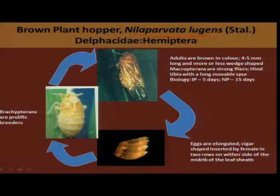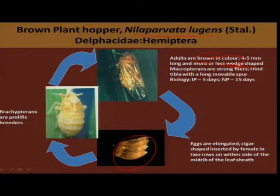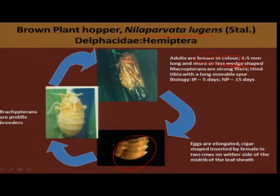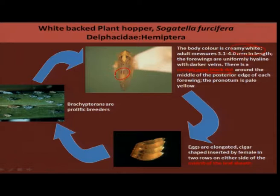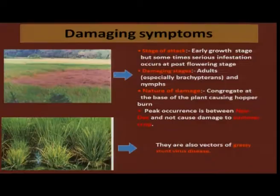The brown plant hopper, scientifically referred to as Nilaparvata lugens, belongs to Delphacidae. The adults are typically brown in color and wedge shaped. They lay eggs serially — translucent eggs in the leaf tissues — which emerge in 3 to 4 days. Both the brachypterous form and adults are the damaging stage. Similarly, the white backed plant hopper can be differentiated under field conditions by color — they are creamy white with a conspicuous black spot on both wings. Their egg laying is also transparent, again in leaf tissues, and both nymphs as well as adults cause damage.